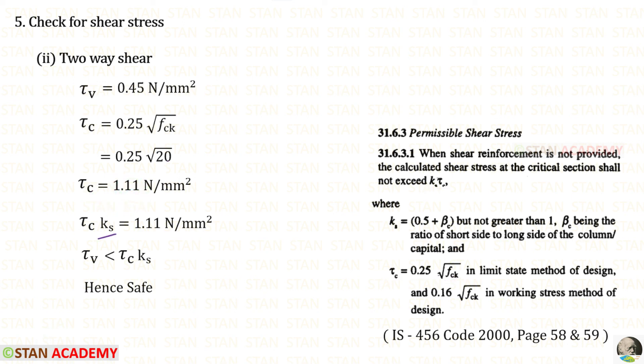KS is 1, so KS into tau C equals 1 into 1.11, giving 1.11. Since tau C·KS is greater than tau V, the section is safe under two-way shear.